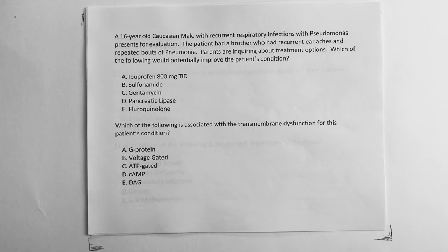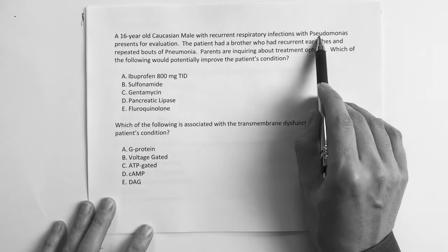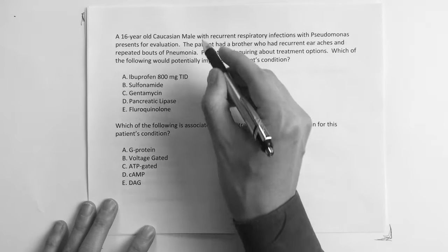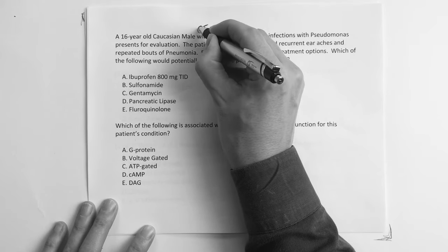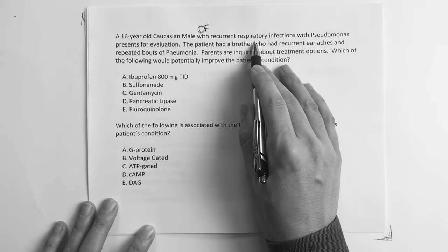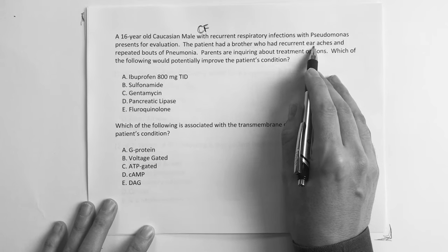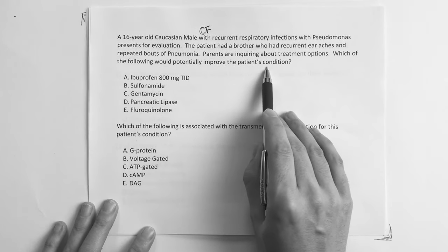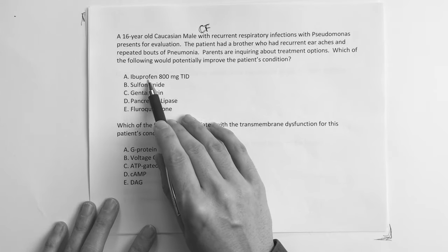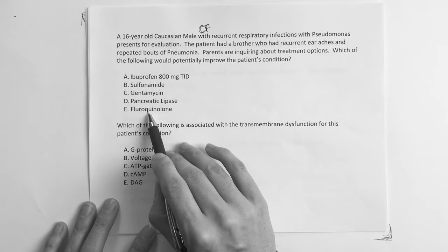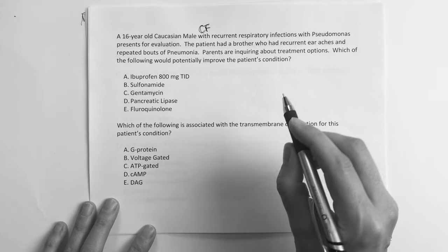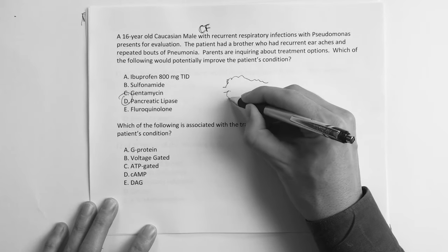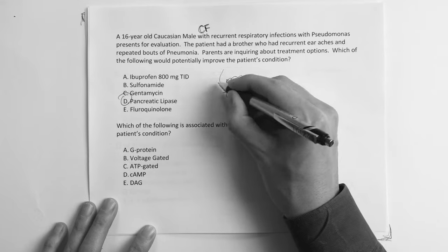This one reads: a 16-year-old male with recurrent respiratory infections with pseudomonas presents for evaluation. The patient had a brother who had recurrent ear aches and repeated bouts of pneumonia. So again you're just looking at something inherited, something with all this respiratory issues, ear aches, the otitis. You've got to be thinking cystic fibrosis. Parents are inquiring about treatment options. Which of the following would potentially improve the patient's condition? Ibuprofen, sulfonamide, gentamicin, pancreatic lipase, fluoroquinolone. And again we know this one, it's going to be the pancreatic lipase because that is affected in cystic fibrosis.